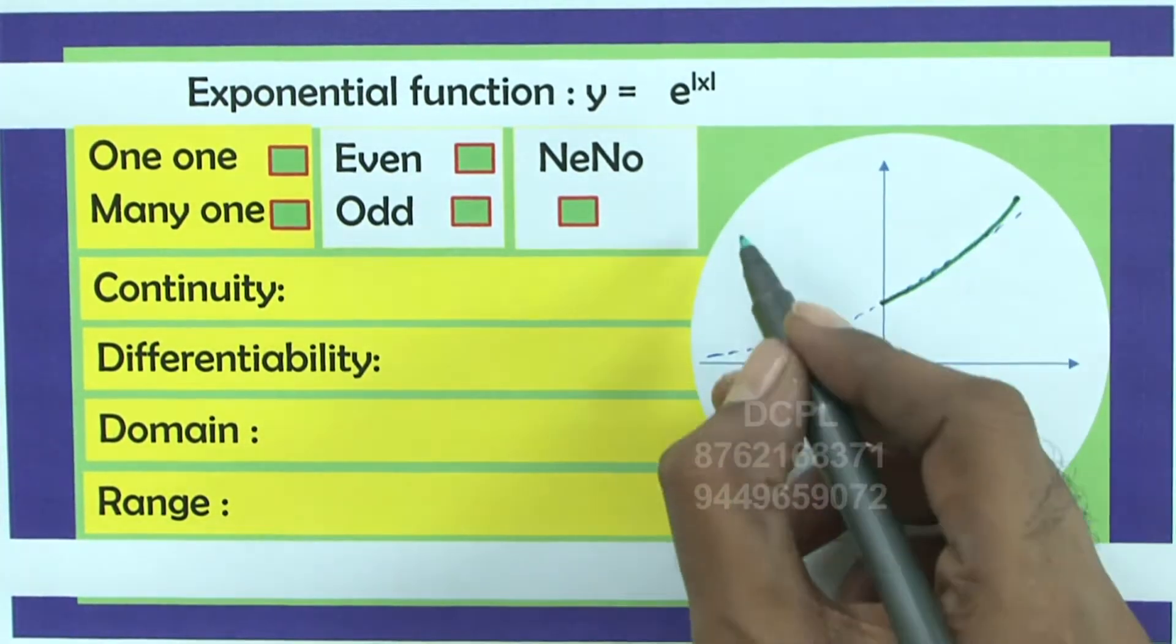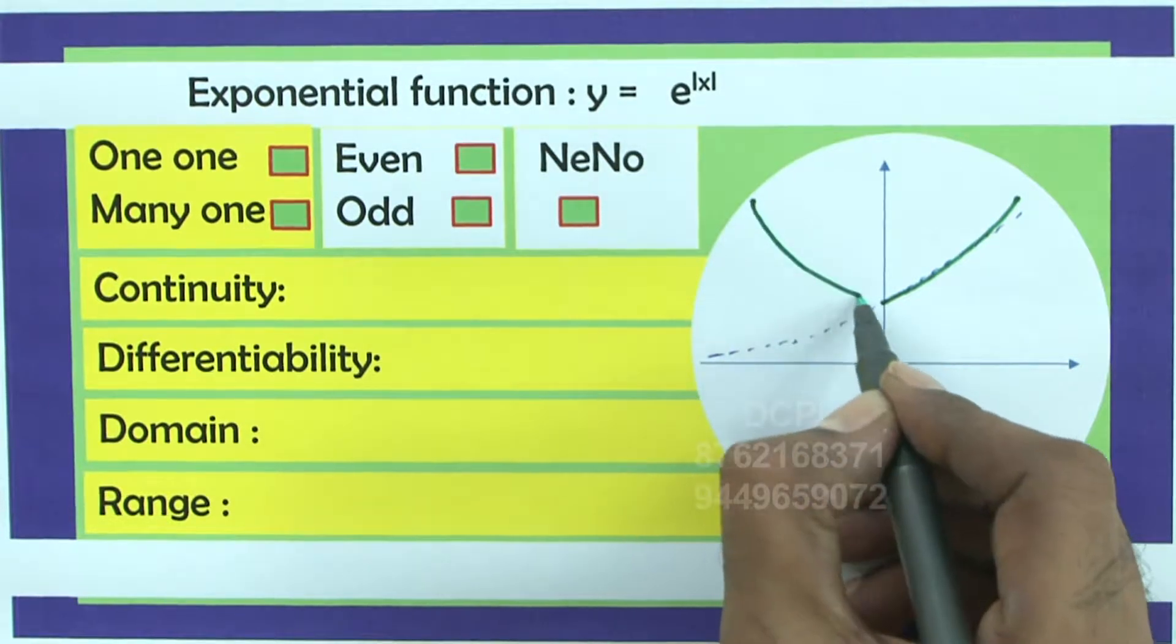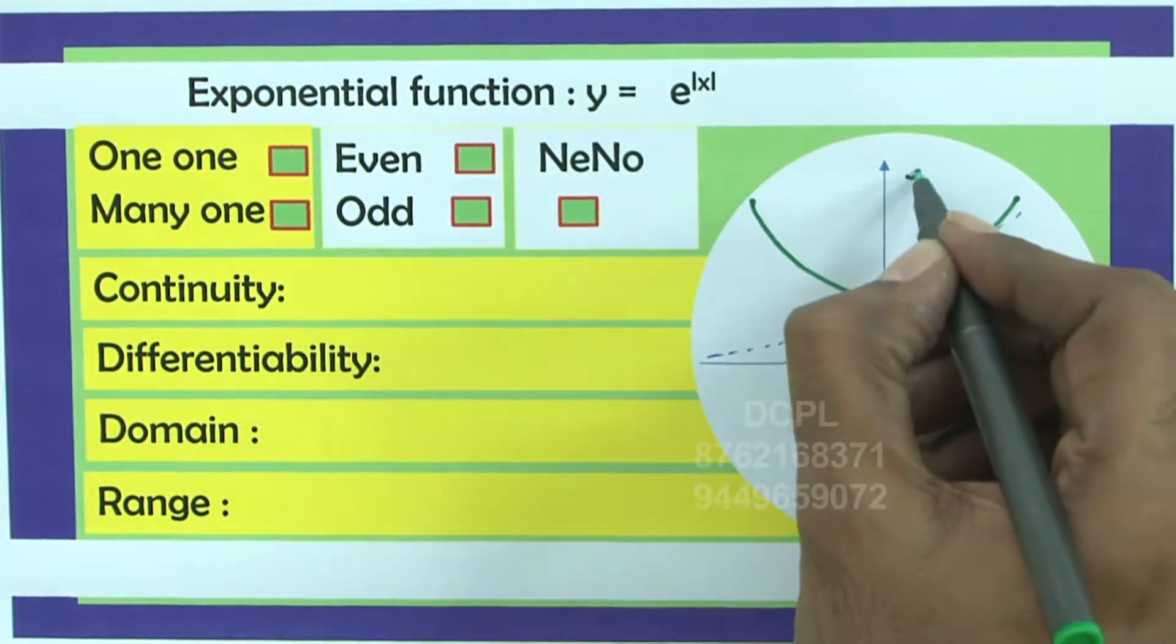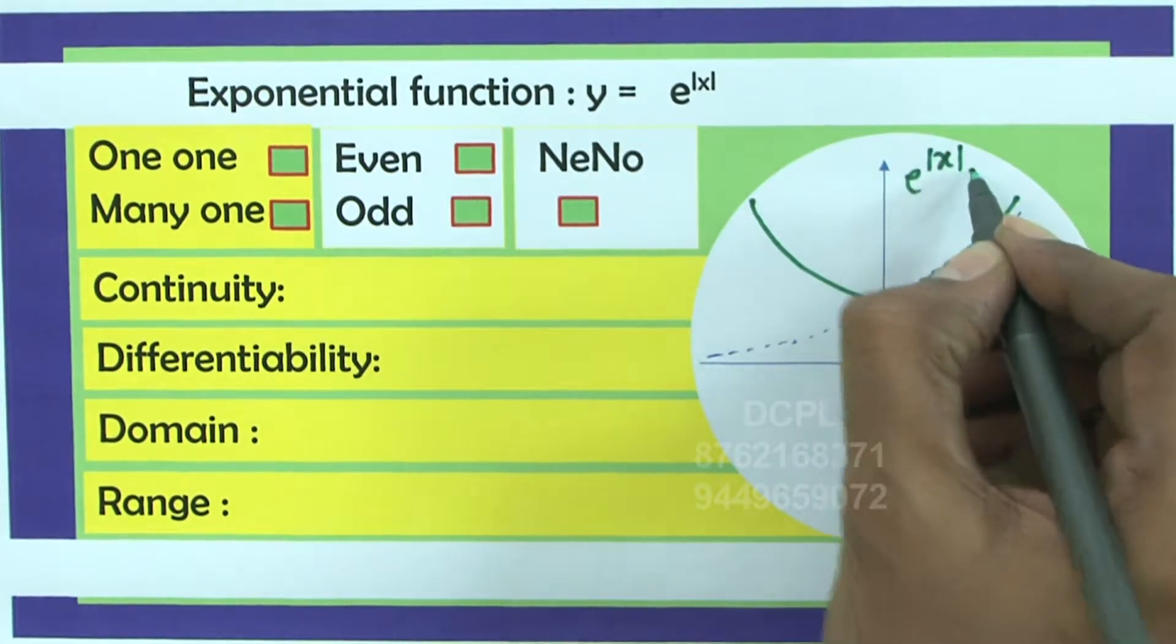Use y axis as a mirror, write its replica. This is clearly e power mod x. Is it correct?